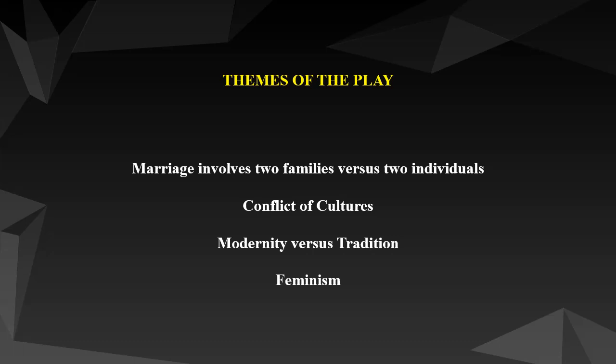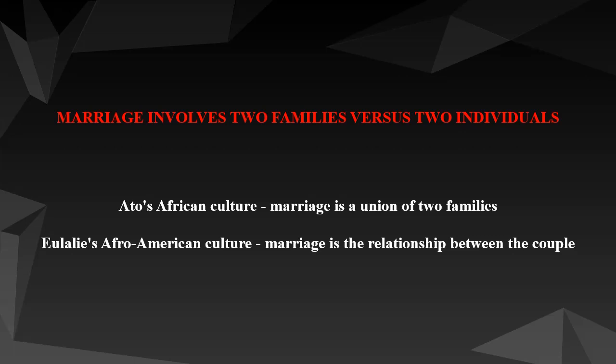Now we are going to see the themes of the play. The major themes are: marriage involves two families versus two individuals; conflict of cultures; modernity versus tradition; and feminism. Regarding the first theme, Ato's African culture and tradition see marriage as a union of two families and not individuals. On the other hand, Eulalie's culture as an Afro-American views marriage as a relationship between the couple. These opposing opinions on marriage pose challenges for their marriage. At the end, however, these two cultures converge when Ato's mother Esicom accepts Eulalie into their family after their major conflict.